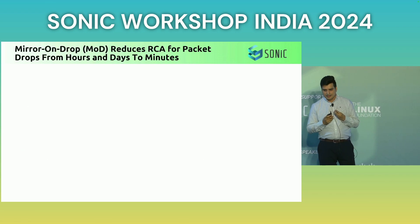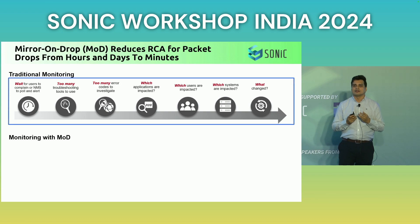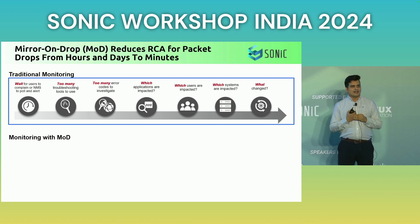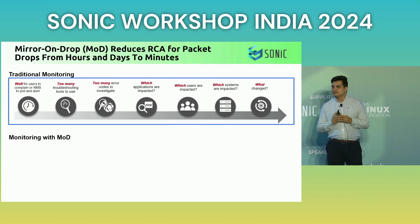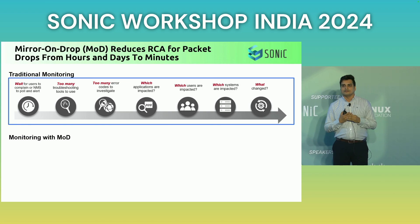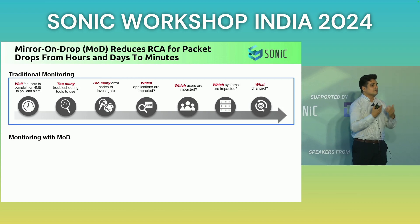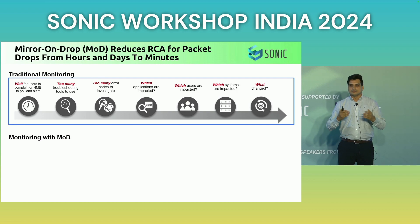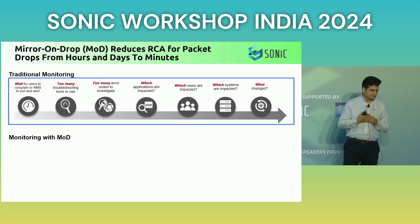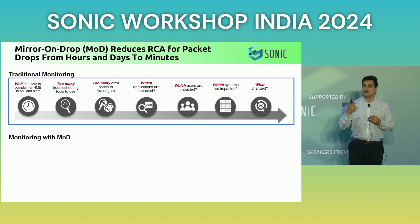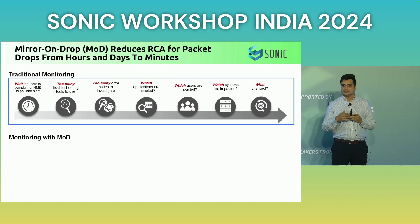Assume there is no Mirror on Drop, like it has always been for us, and you are working for an e-commerce player. Suddenly, for 15 minutes, your portal is slow or not working. Your customers will simply go to another e-commerce portal and start buying - that's a loss of millions, billions of dollars. As soon as something like this happens, your CEO calls your CTO and tells him the portal is not working.